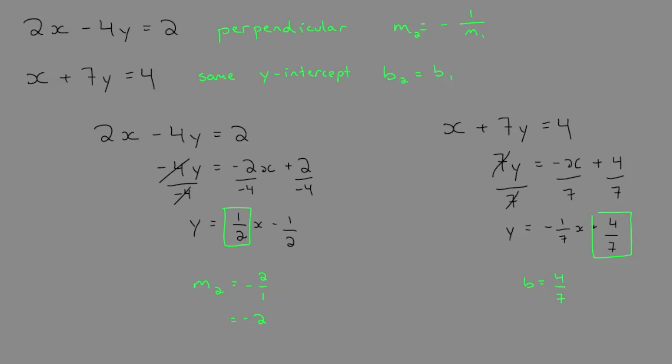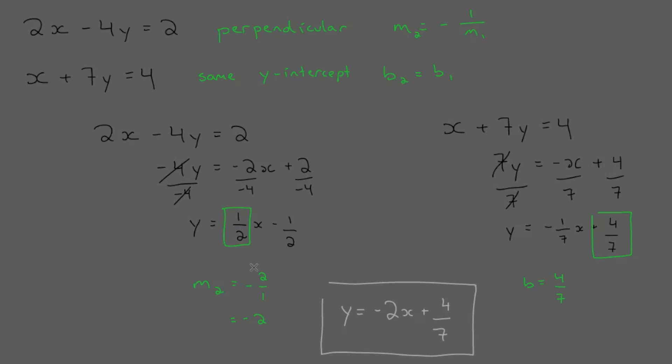Our equation combines these two things. In slope y-intercept form, we get y equals negative 2x plus 4/7. And that's our equation. Thank you.